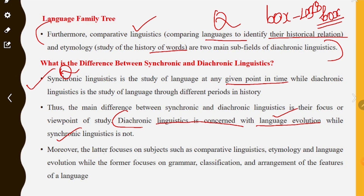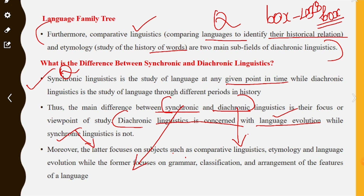Diachronic linguistics focuses on subjects such as comparative linguistics, etymology, and language evolution. While synchronic linguistics — the former — focuses on grammar, classification, and arrangement of the features of a language.